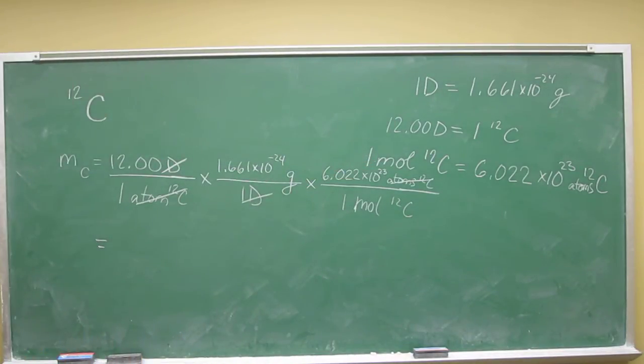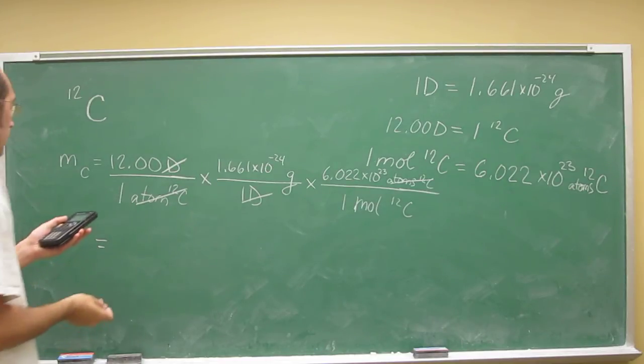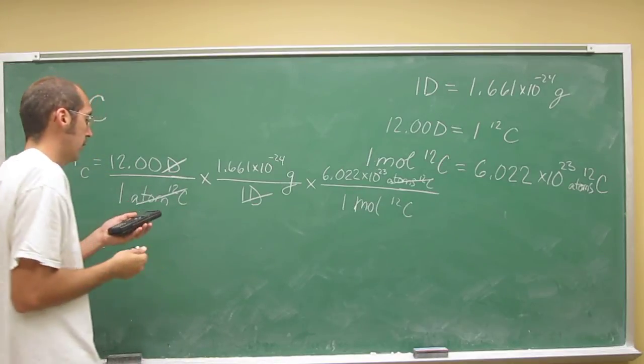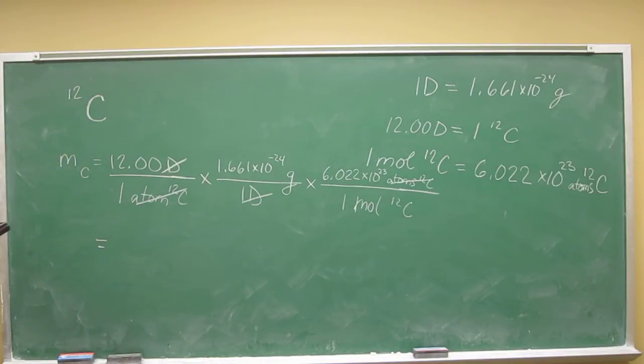This is pretty interesting. Let's do that. We've got 12.00 times 1.661E negative 24. That's how many grams one carbon-12 atom weighs: 1.9932 times 10 to the negative 23rd grams. Then we just multiply that number by Avogadro's number to figure out how much a mole weighs in grams.